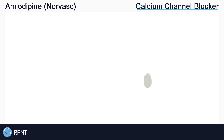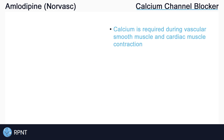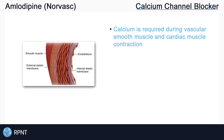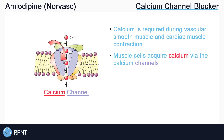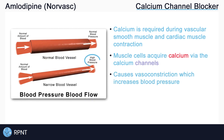Amlodipine belongs to the calcium channel blocker drug classification. Calcium is required during the muscle contraction of our vascular smooth muscle and our cardiac muscle. Our blood vessels are lined with these vascular smooth muscle cells which allow the blood vessels to either constrict or dilate. The way that these muscle cells normally get calcium is through the calcium channels. If the blood vessels are constricted, our blood pressure rises. If the blood vessels are dilated, our blood pressure lowers.